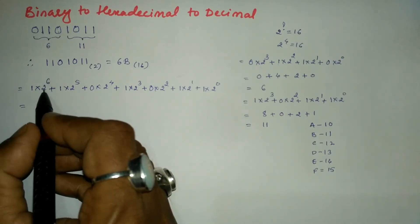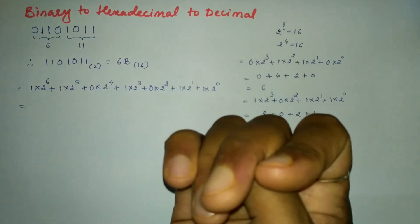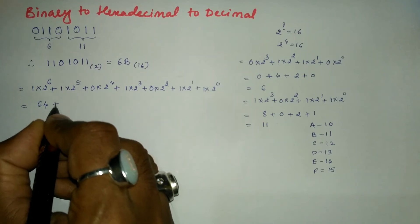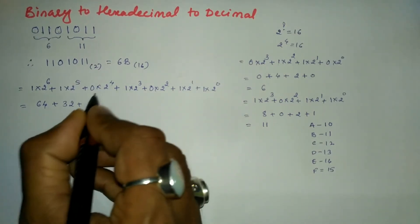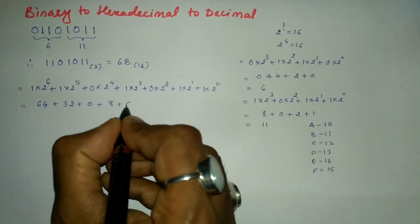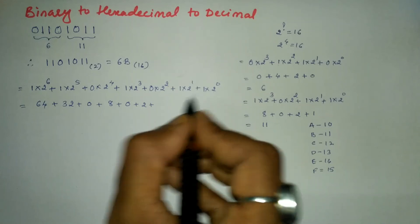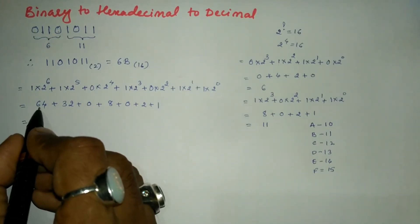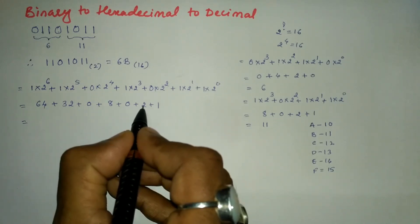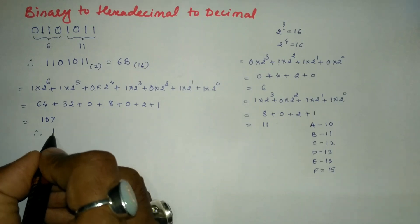Now let us simplify. 2⁶ means multiplying 2 six times: 2→4→8→16→32→64. So 1×64 = 64. 2⁵ = 32, so 1×32 = 32. Zero times anything is 0. 2³ = 8, so 1×8 = 8. Zero times anything is 0. 2¹ = 2, so 1×2 = 2. 2⁰ = 1, so 1×1 = 1. Adding: 64 + 32 = 96, 96 + 8 = 104, 104 + 2 = 106, 106 + 1 = 107.